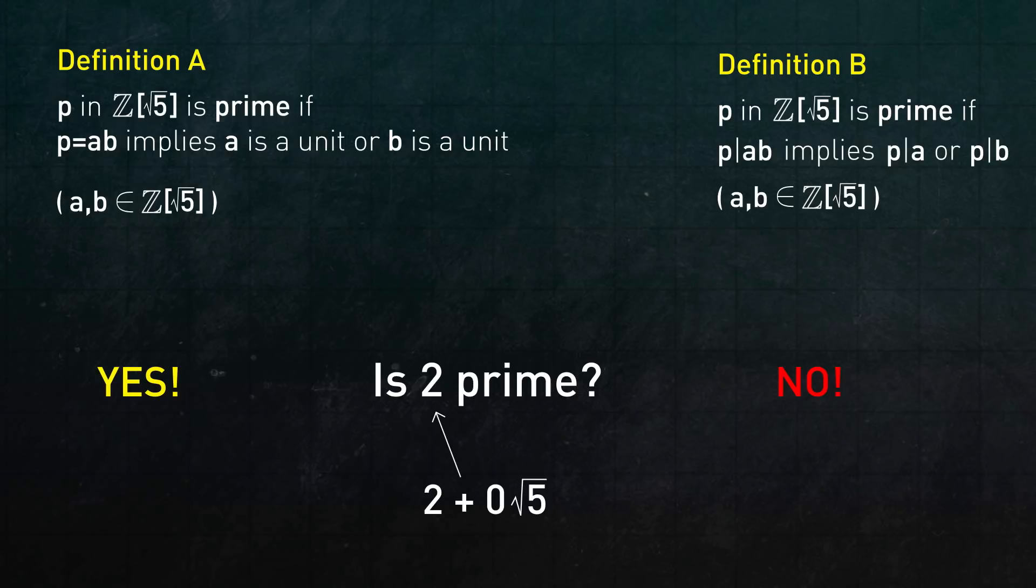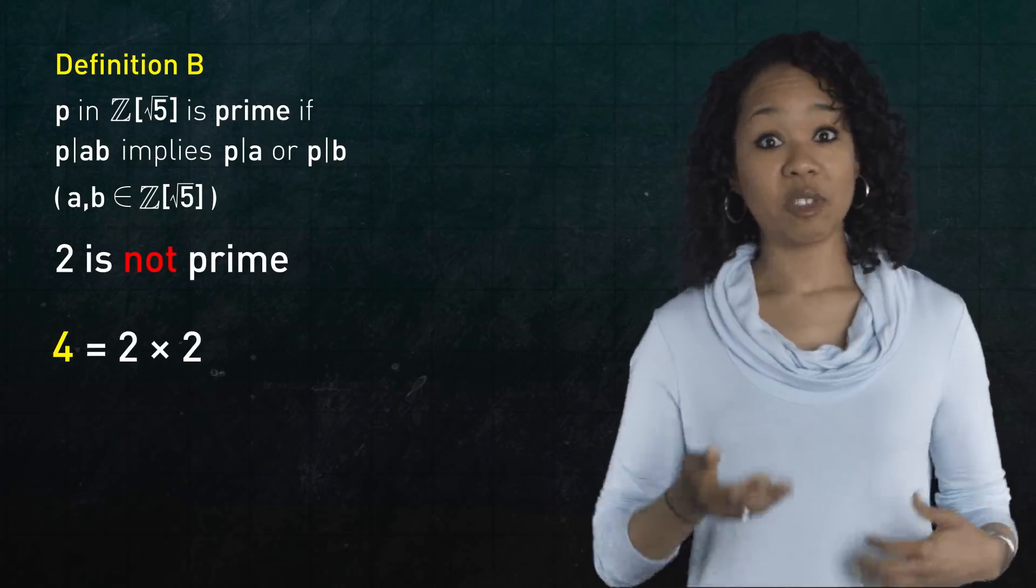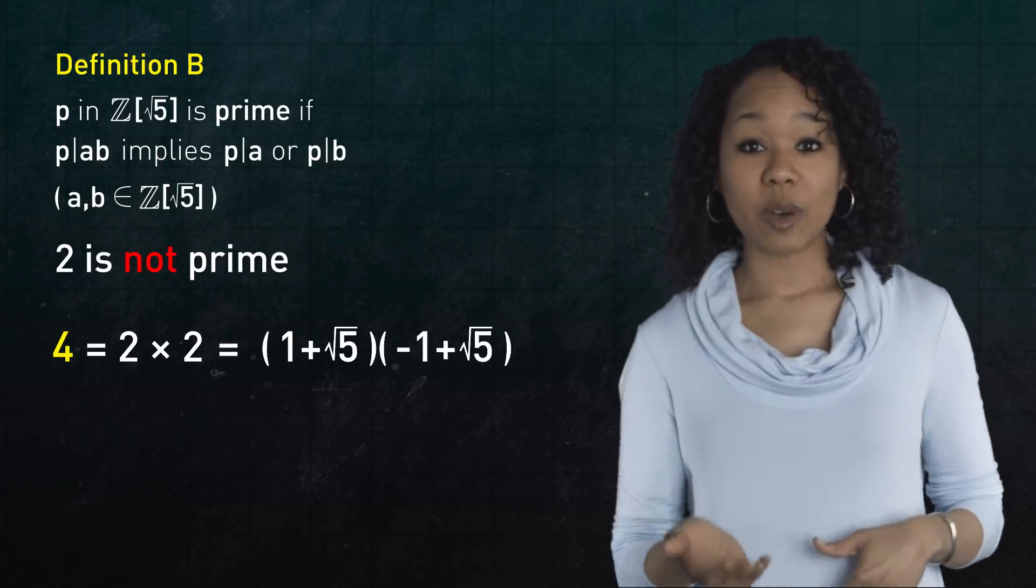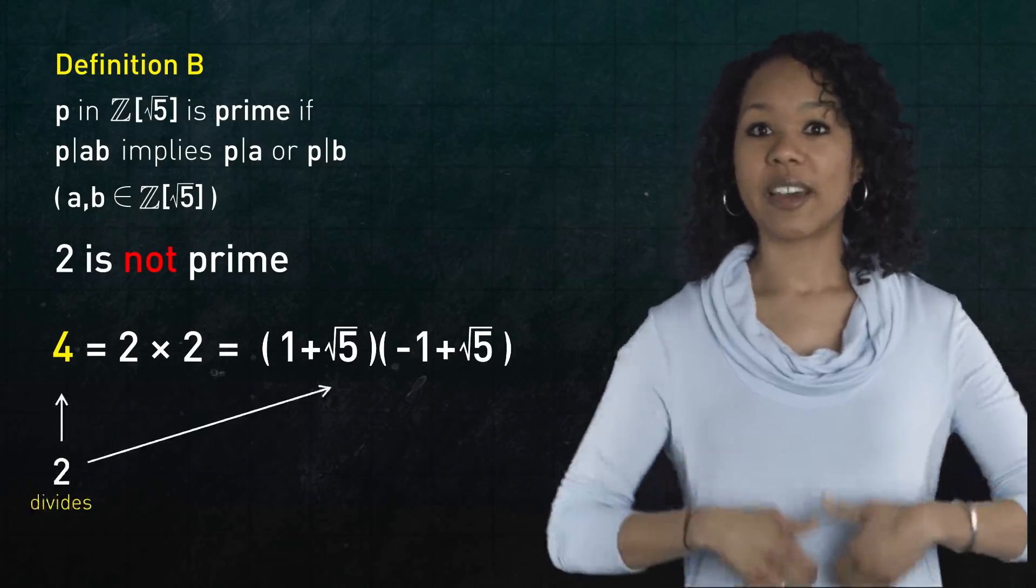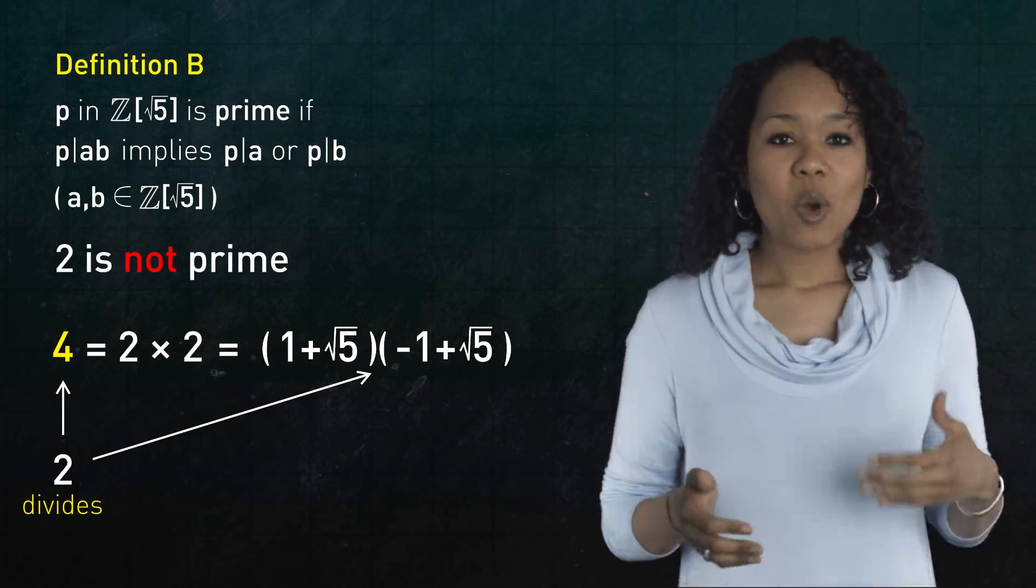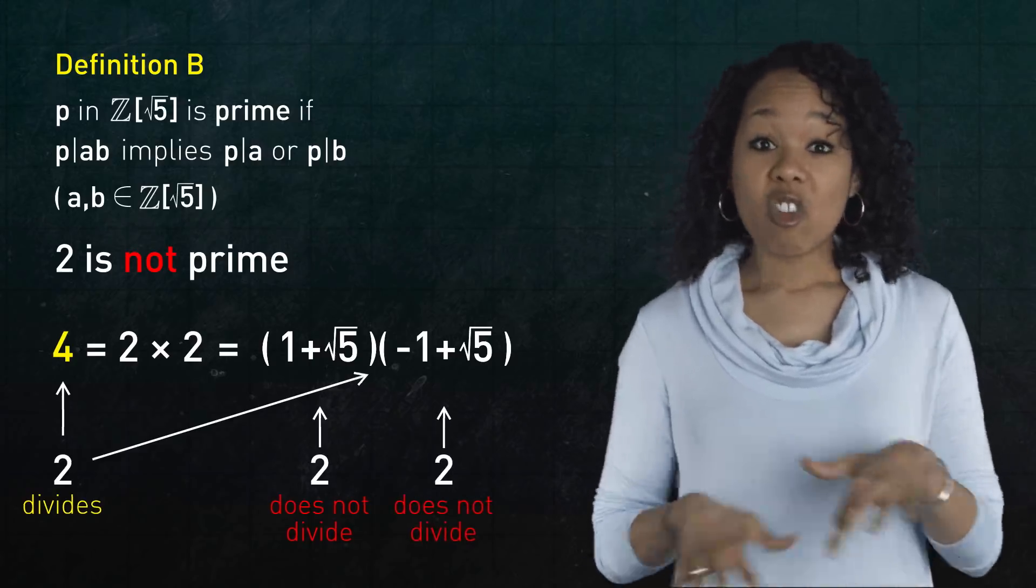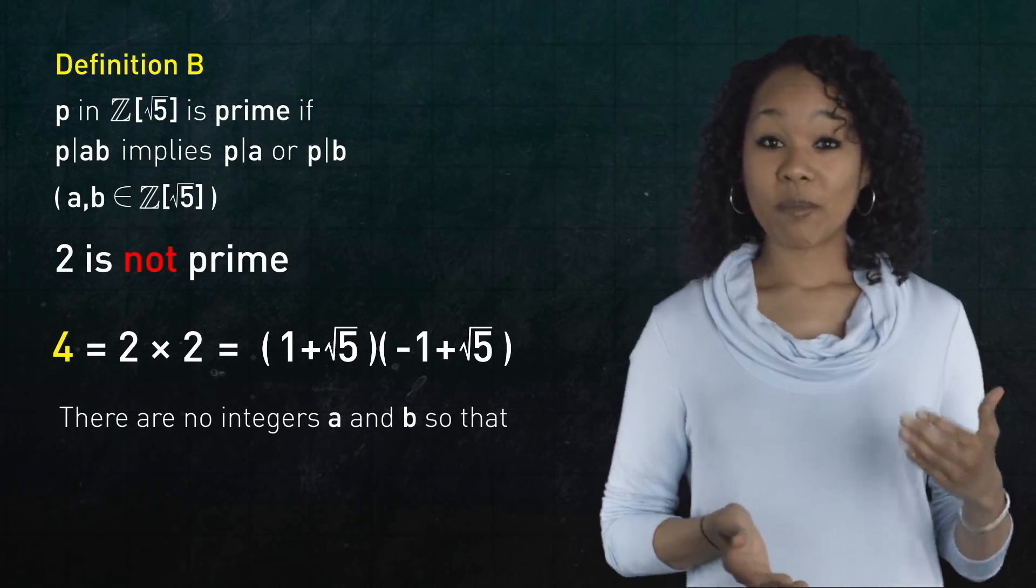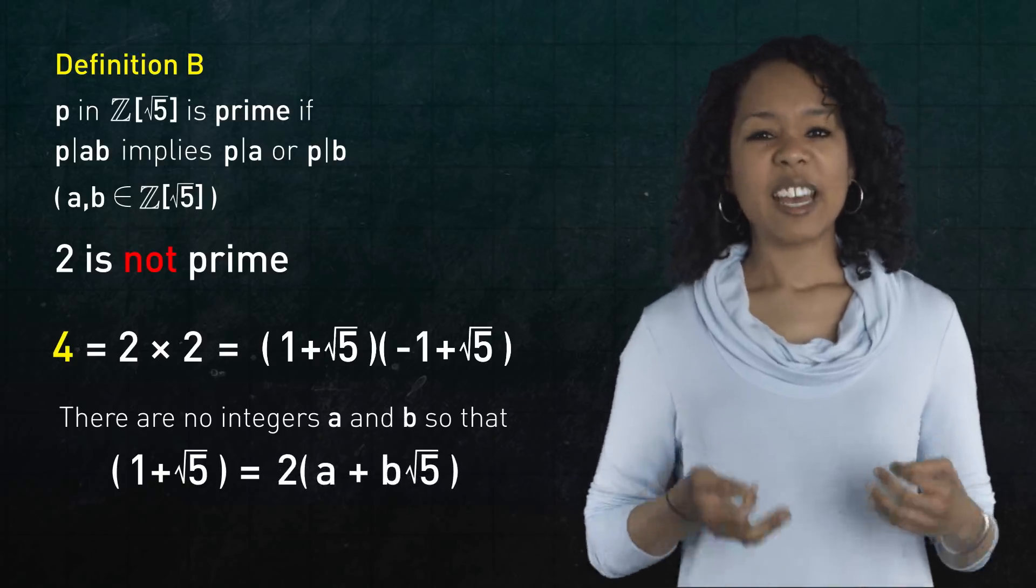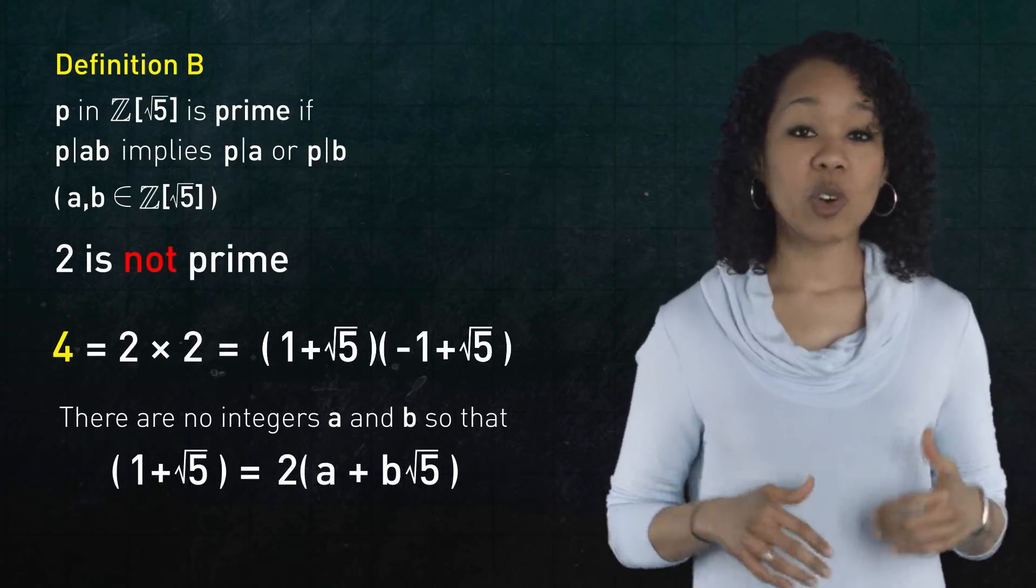First, let's see why 2 is not prime according to definition b. Notice that 4 can be written as 2 times 2, but it can also be written as 1 plus root 5 times negative 1 plus root 5. This means that 2 divides the product. But 2 does not divide either factor, 1 plus root 5 or negative 1 plus root 5. In other words, and you can verify, there are no integers a and b so that 1 plus root 5 equals 2 times a plus b root 5. Similarly, if you replace 1 by negative 1. This shows that 2 is not prime according to definition b.